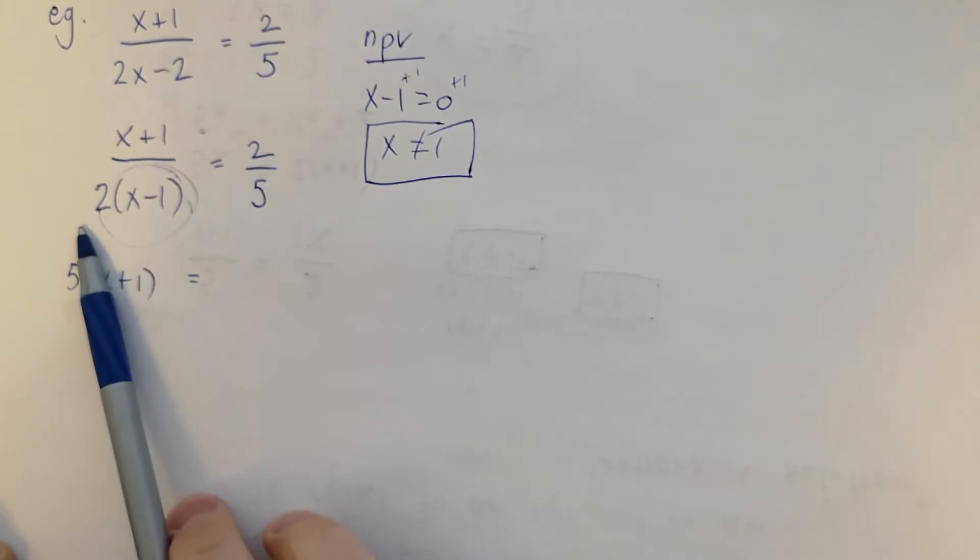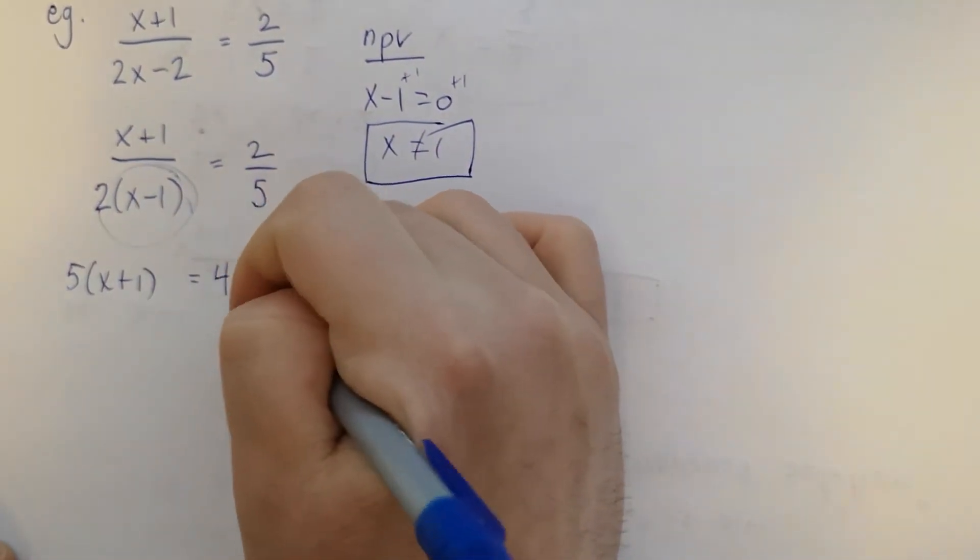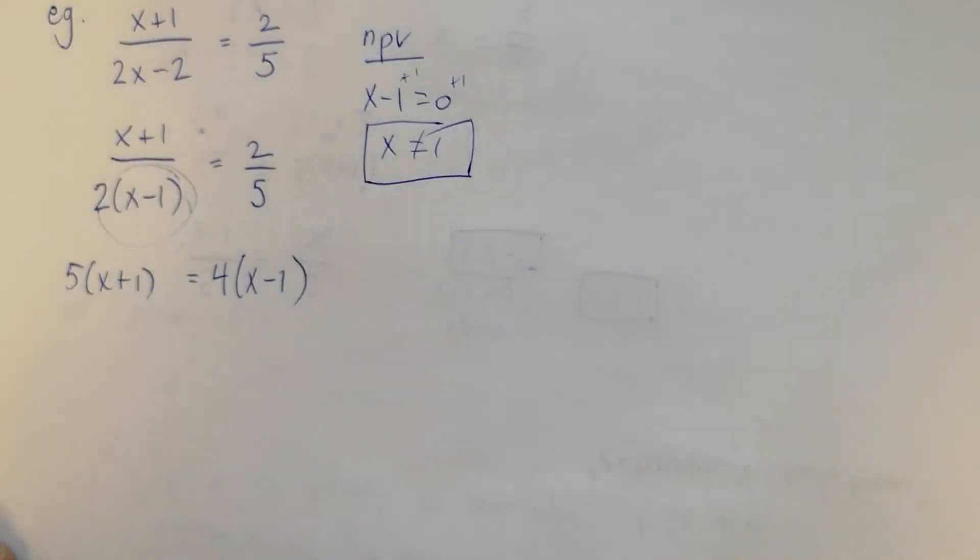I've got two times two times x minus one. I'm going to do that two times two right away. It'll look like that.